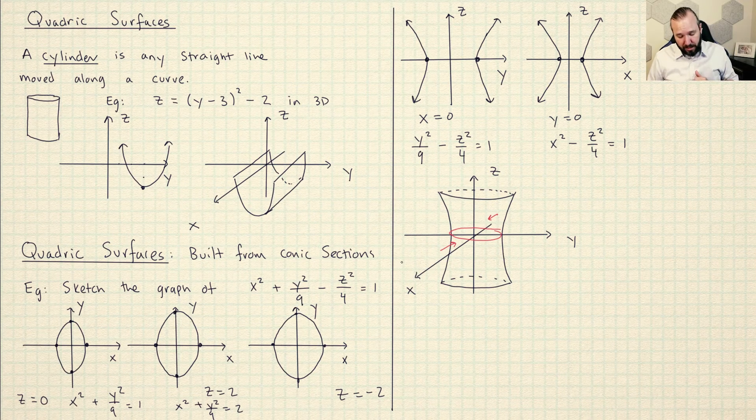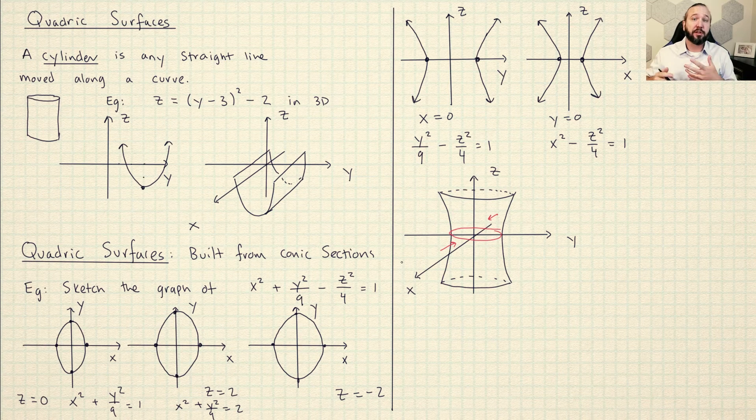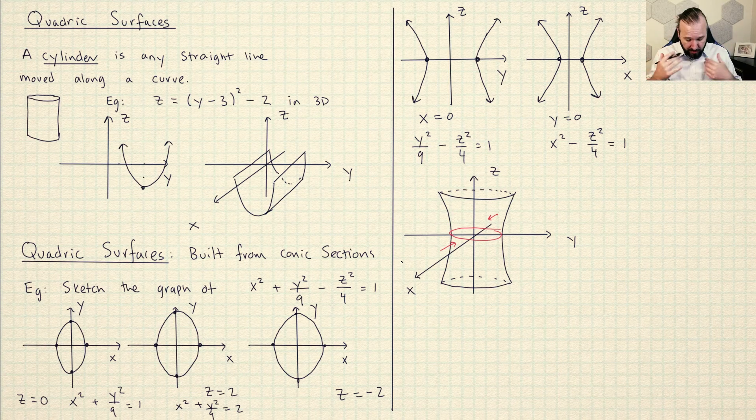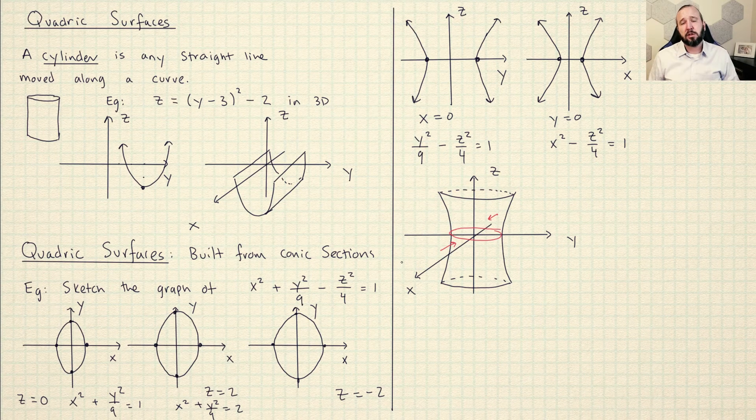So this is my general method for graphing quadric surfaces. Start slicing the surface by picking a letter and plugging in numbers for that letter. And that's going to give you a bunch of 2D graphs and then you use those 2D graphs to build the 3D graph.